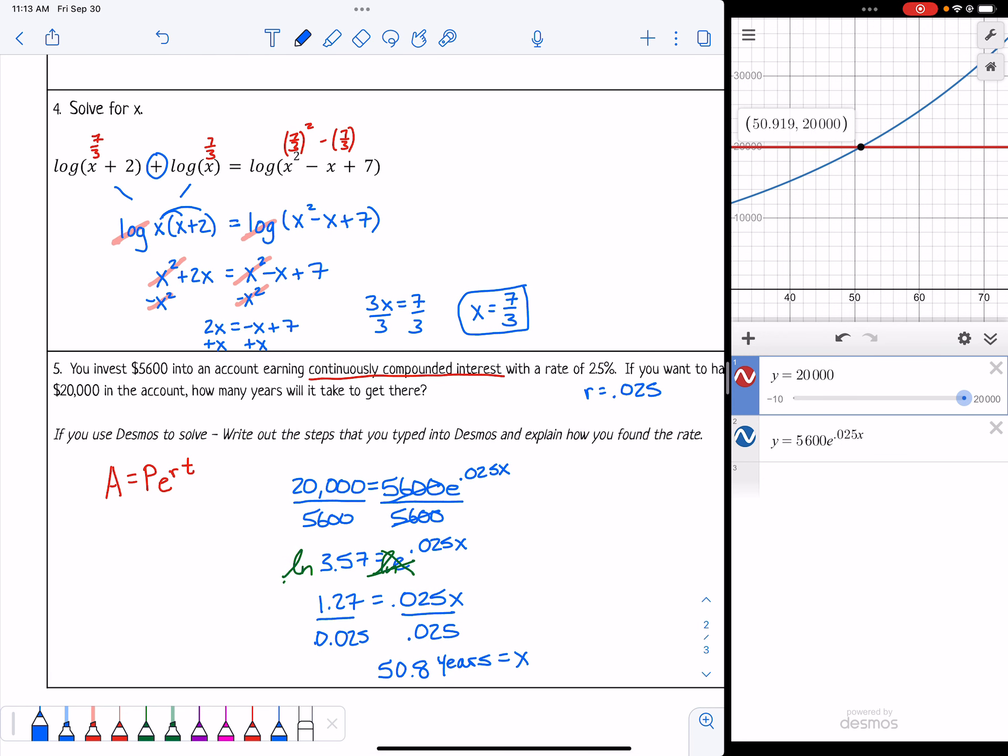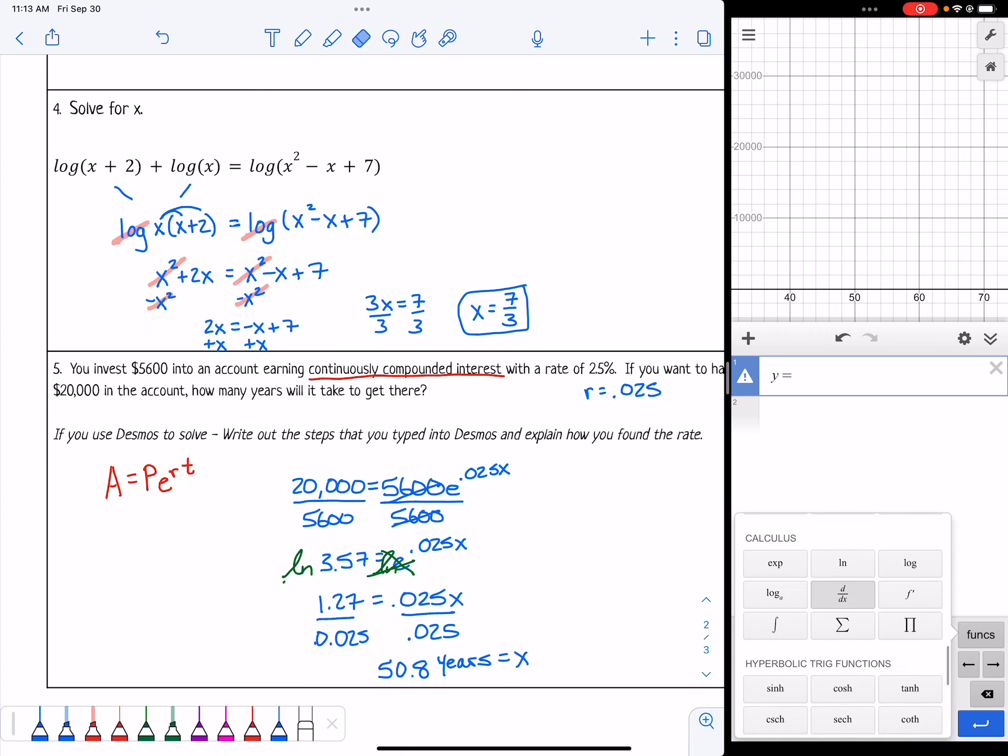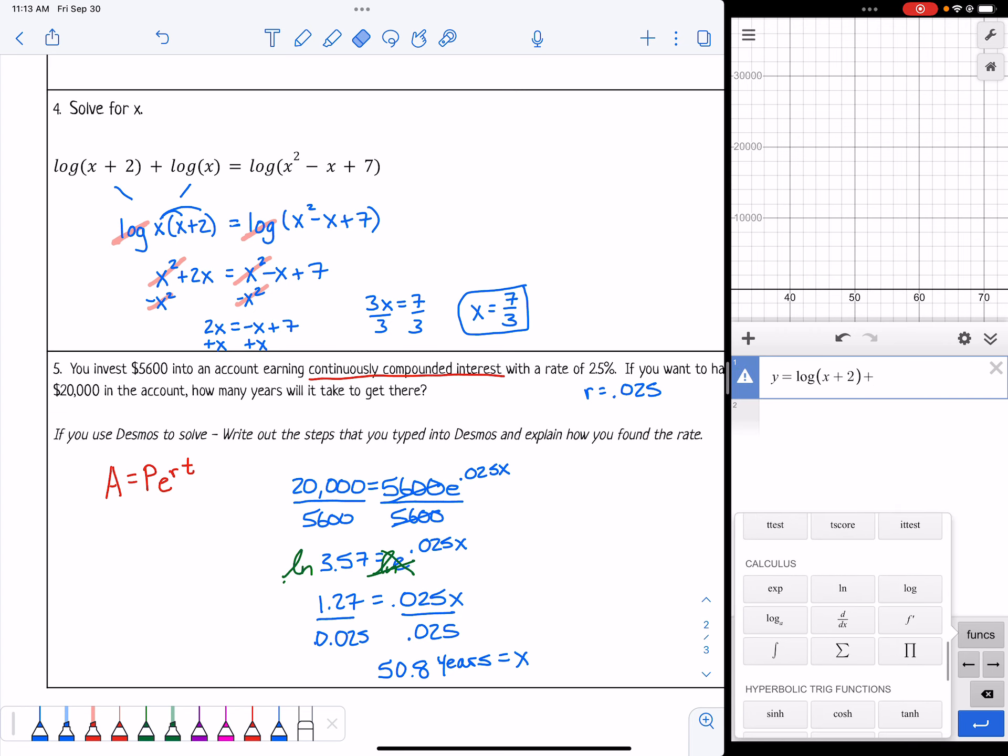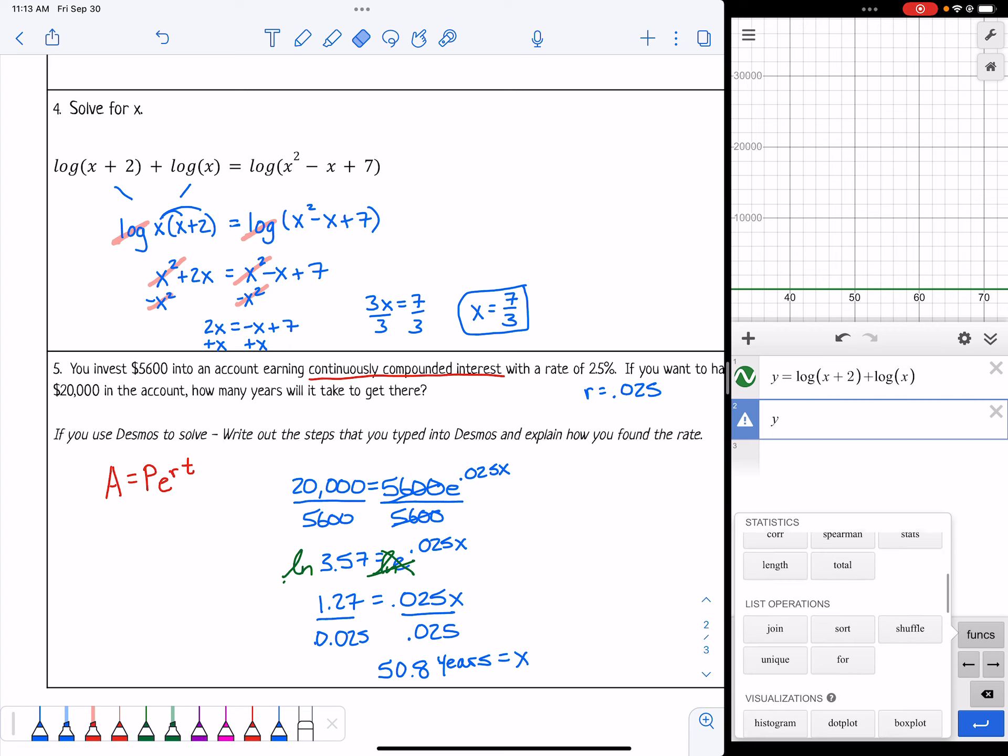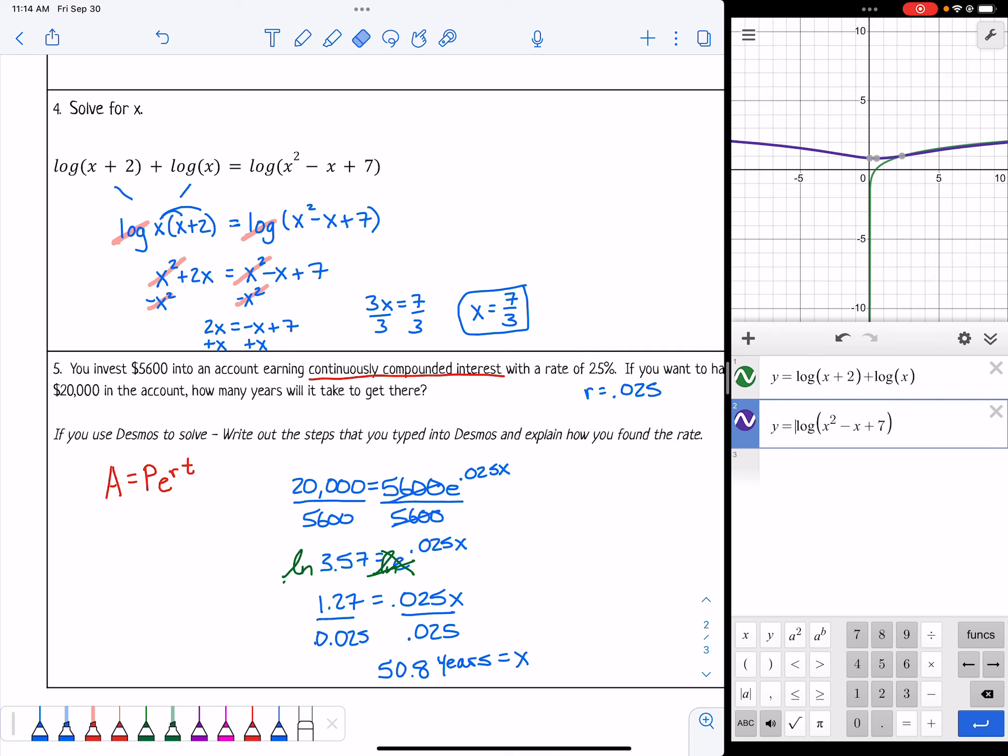I want to go back to number 4 real quick and show you that 7 thirds would be pretty tough to type all that in. What you can do is type in y equals what's on the left. So y equals log of x plus log of x plus 2. That's in one equation. Then in the next line, you've got to put what's on the right. So I need to go down to log of x squared minus x plus 7, just like it looks. So y equals the left, and y equals what's on the right.